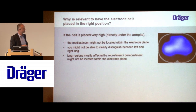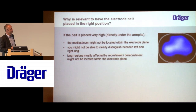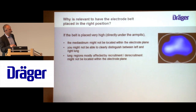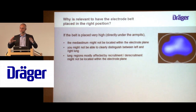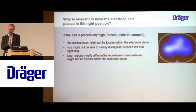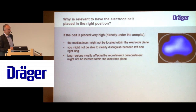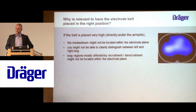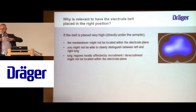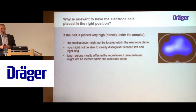If you place the belt very high, directly under the armpits, in very many patients the mediastinum is not located in the electrode plane. Because of the relatively low spatial resolution, you cannot really distinguish precisely anymore between the left lung and the right lung. A further disadvantage is that in the upper, apical part of the lung, the beginning of recruitment is probably not so easily seen.